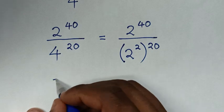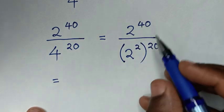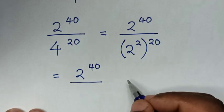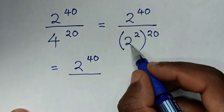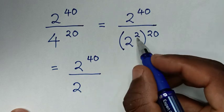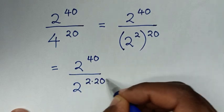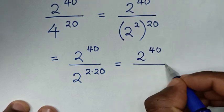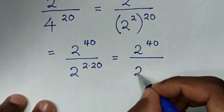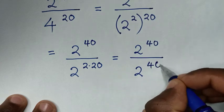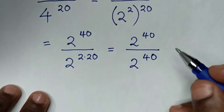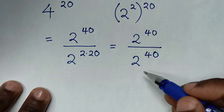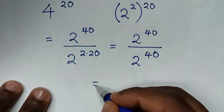Then it will be equal to: here in the numerator 2 power of 40, then over, we open the bracket, so it will be 2 power of 2 times 20. Then it will be equal to 2 power of 40 over 2 power of 40. In here, division of exponents with same base of 2 and same power of 40: 2 power of 40 divided by 2 power of 40 is equal to 1.